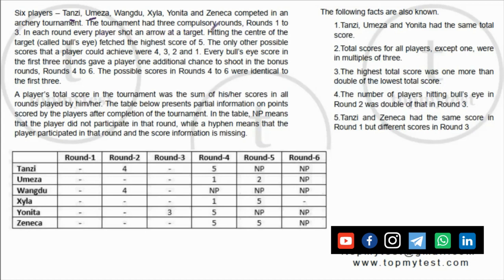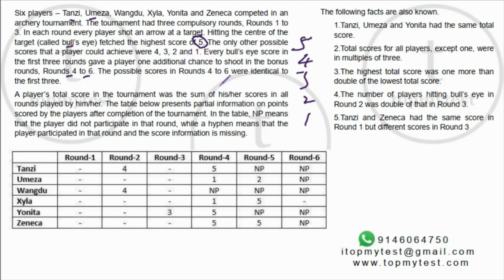Set 65: Six players — Tanzi, Umeza, Vangadu, Xyla, Yonita, and Zeneca — completed an archery tournament with three compulsory rounds. In each round, every player shoots an arrow. Hitting the center is a bullseye scoring 5 points; other possible scores are 4, 3, 2, and 1. Every bullseye in the first three rounds gives the player one additional chance to shoot in bonus rounds four through six.